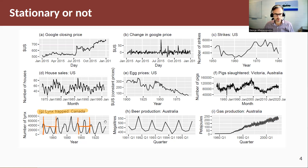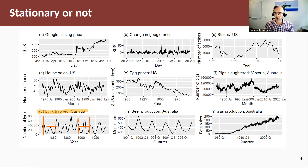The last time series is the lynx trap data, which we've seen before. This is annual data, so it is not seasonal but it is cyclical — aperiodic. The cycles vary between 9 and 11 years, so in the long term these are not predictable. Hence this type of data is considered stationary.